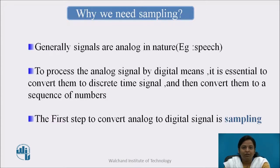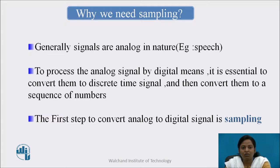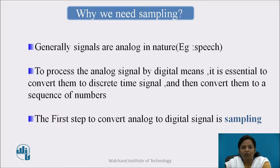Why do we need sampling? Generally, information sources have signals which are analog in nature — for example, speech. To process an analog signal by digital means, it is essential to first convert it to a discrete time signal, and then convert it to a sequence of numbers. So the first step to convert an analog signal to a digital signal is sampling.